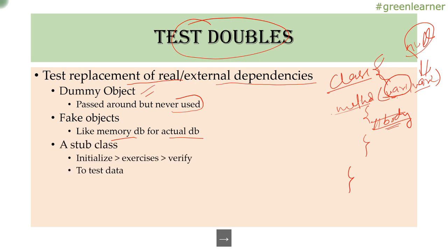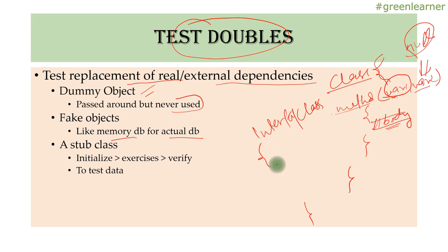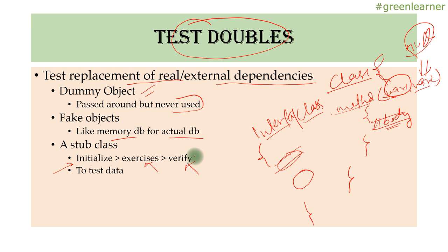Next is the stub class. If you have an interface or class used in your real application, when stubbing it you create a dummy implementation — another class implementing that interface or extending that class — and override the actual methods to return the values needed for your unit test cases. The flow is: initialize the stub class, exercise what you want to do, then verify the expected behavior.